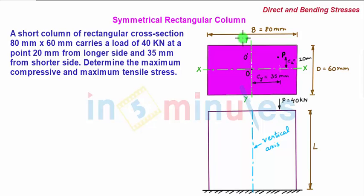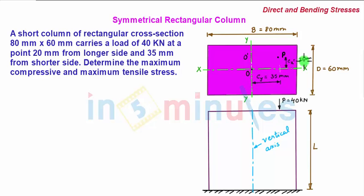The width and depth of our rectangular cross-section column are 80 mm and 60 mm respectively. On this cross-section we have load P acting vertically downward at eccentric distance ex equal to 20 mm from the longer side, which is the width, and ey equal to 35 mm from the shorter side, which is the depth.